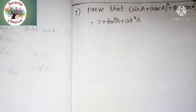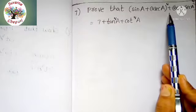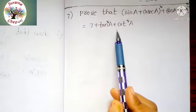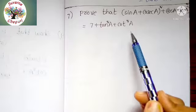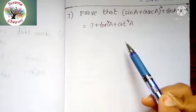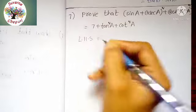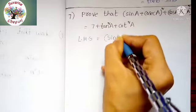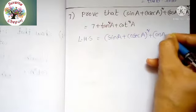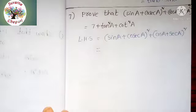Next, the 7th question. Prove that sin A plus cosecant A whole squared plus cos A plus secant A whole squared equals 7 plus tan squared A plus cot squared A. This is the question. We need to prove LHS equals RHS. Write down LHS equal to sin A plus cosecant A whole squared plus cos A plus secant A whole squared. This is the LHS. Evaluate this one.